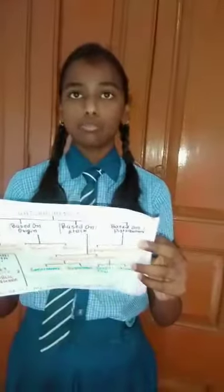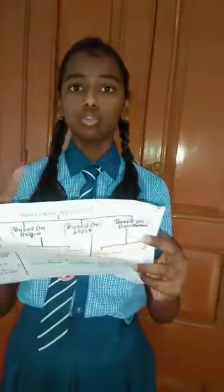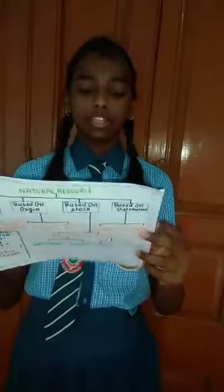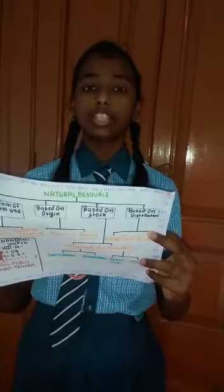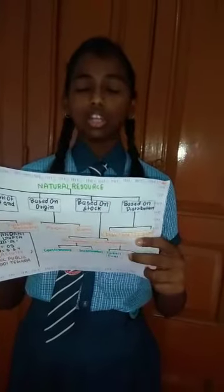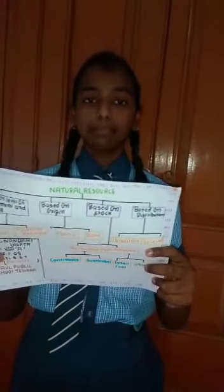Next, based on distribution, there are two resources: ubiquitous resources and localized resources. Ubiquitous resources are found everywhere on the earth. Example: air, water, land. Next, localized resources. Localized resources are found only in particular places. Example: minerals.